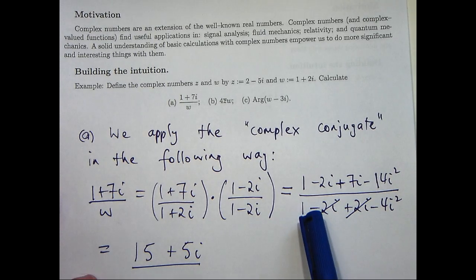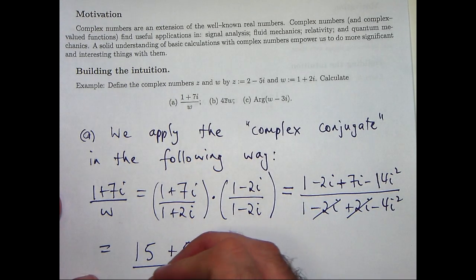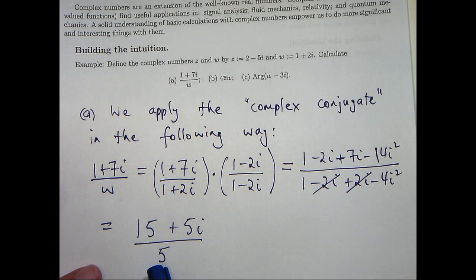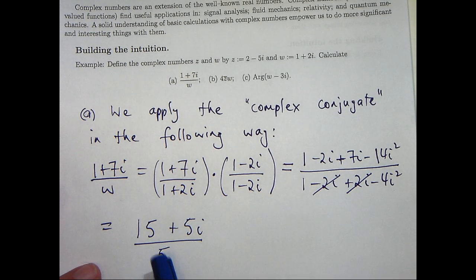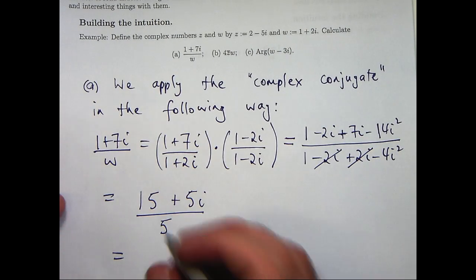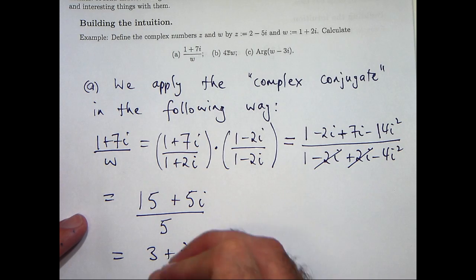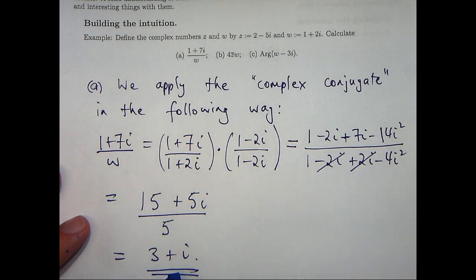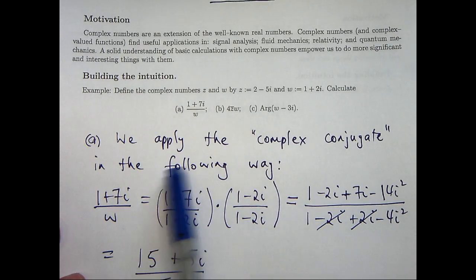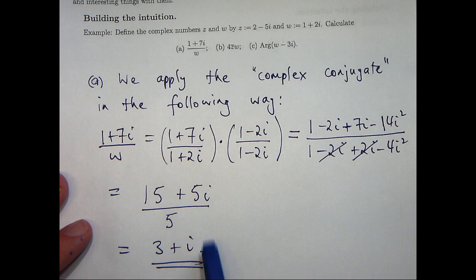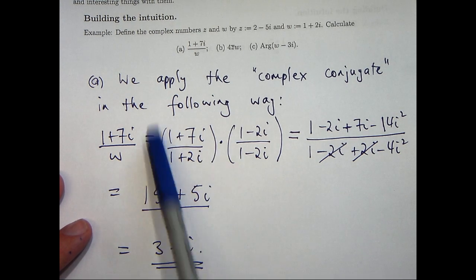Now on the bottom I have 1 minus 4i squared. i squared is negative 1 so I am going to have 1 plus 4. So indeed we can see that yes that is a real number now and in fact I can go one step further and divide into each term here. Okay so this is our answer for part A. Now notice this is much simpler than this expression here. It's much easier to plot this for example in the complex plane than this.